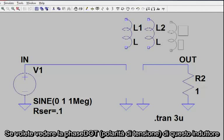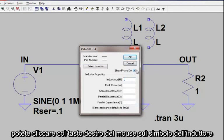If we want to see the phase dot of these inductors, we can right-click on the inductor symbol, check show a phase dot, and click OK.